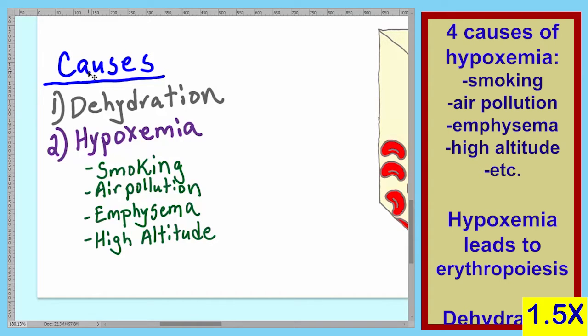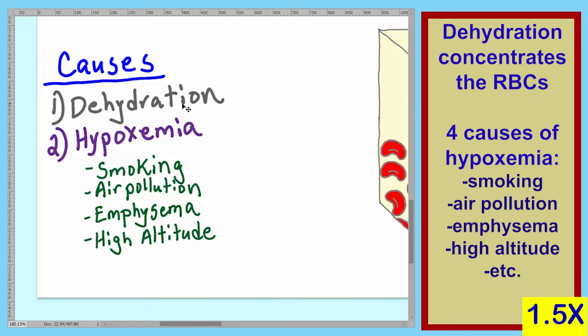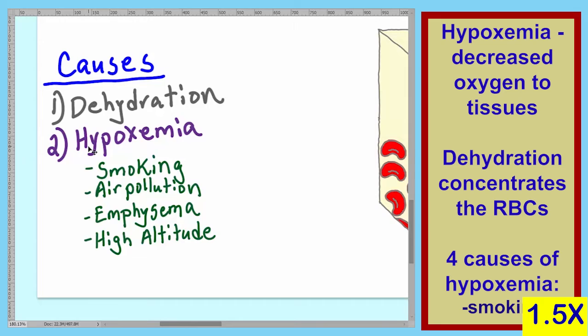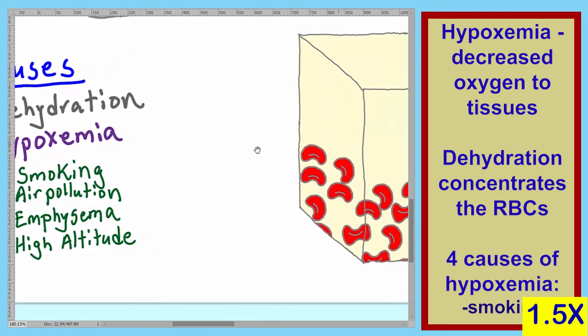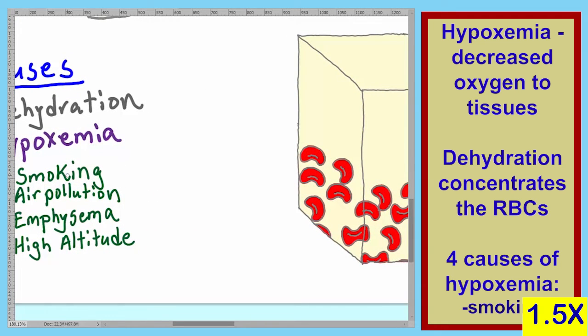The first cause of the second form of polycythemia is dehydration. With dehydration, we aren't really increasing the number of red blood cells, but we're lowering the volume of water in the blood, which decreases blood volume. Since the blood volume is decreased and the amount of red blood cells is constant, that leads to a concentration of the red blood cells. The second cause is hypoxemia — low oxygen concentration — which can result from smoking, air pollution, emphysema, and high altitude.